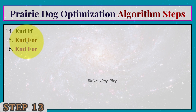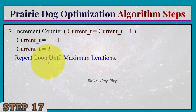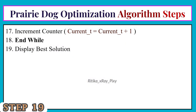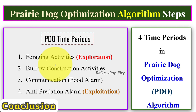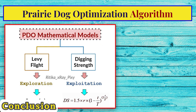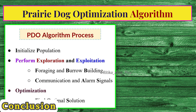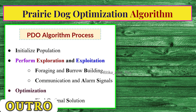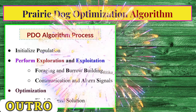After all loops complete, the counter is incremented and the loop repeats until maximum iteration is reached, then the best solution is displayed. This algorithm simulates different prairie dog activities — food foraging, burrow construction, communication, and anti-predatory alarm — to provide a good balance between exploration and exploitation phases. It can be used to solve a variety of optimization problems with accurate and efficient solutions. Thanks for watching.